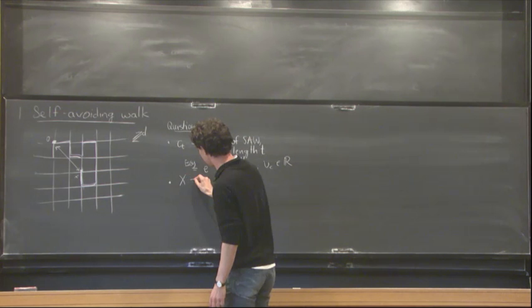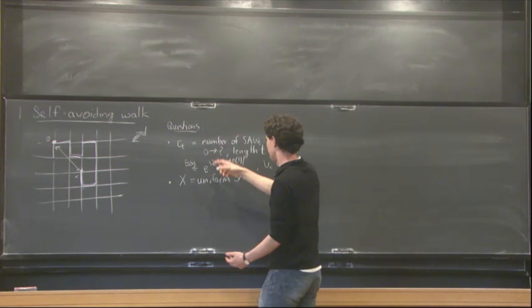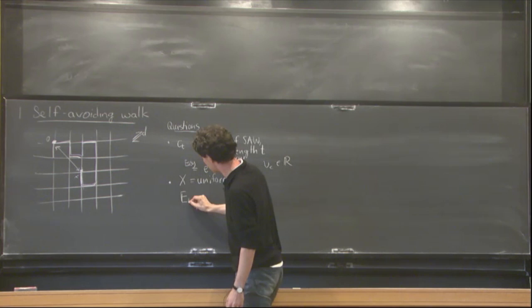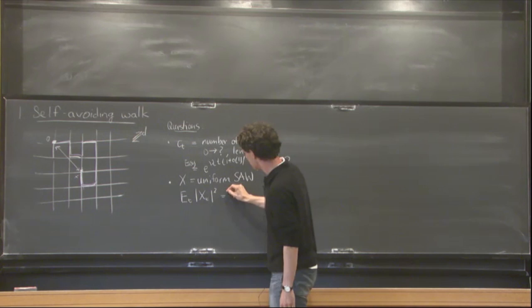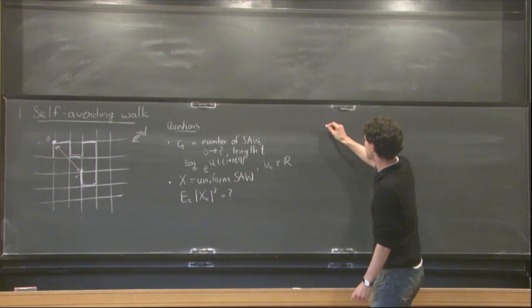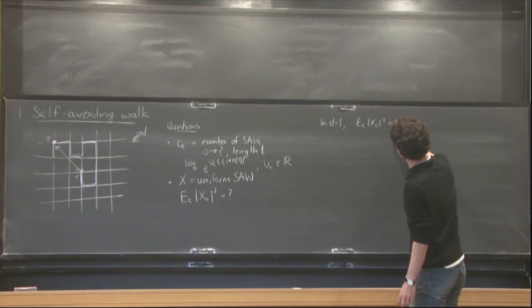If X is again from 0 to anywhere of length t, then one way to measure this is the so-called squared end-to-end distance, which is the expectation of the end points squared. So you may ask what this is, and let me illustrate this in a couple of examples. So if you look at one dimension, this is a trivial question, because the self-avoiding walk is a straight line. It either goes left or right. So the squared end-to-end distance is simply t squared.